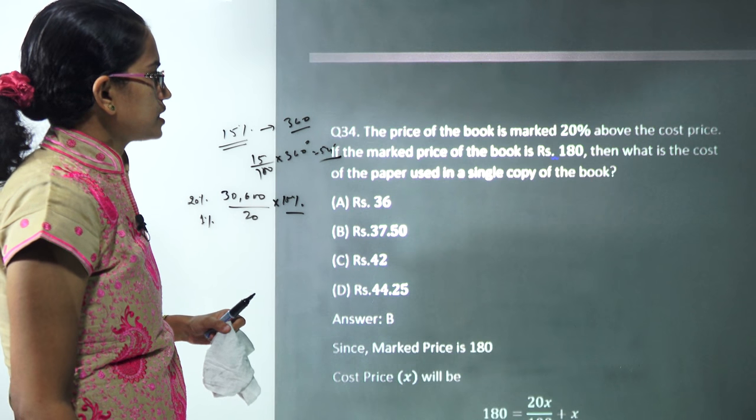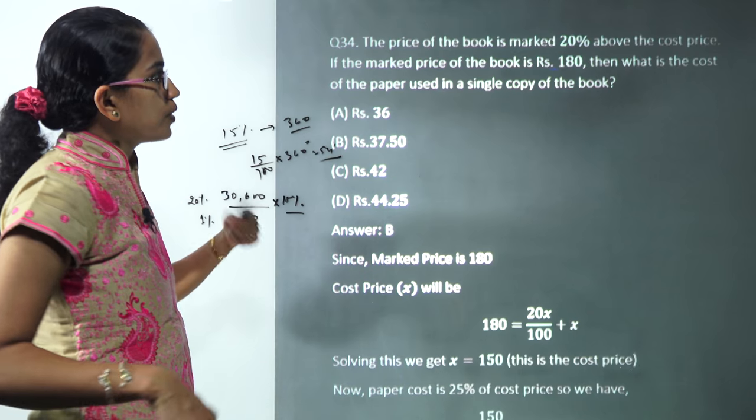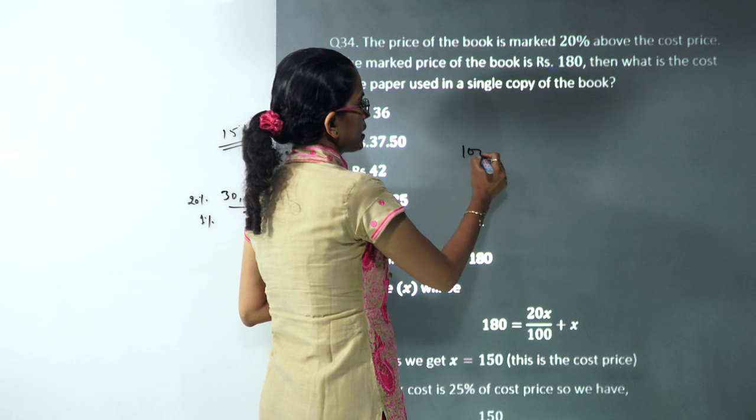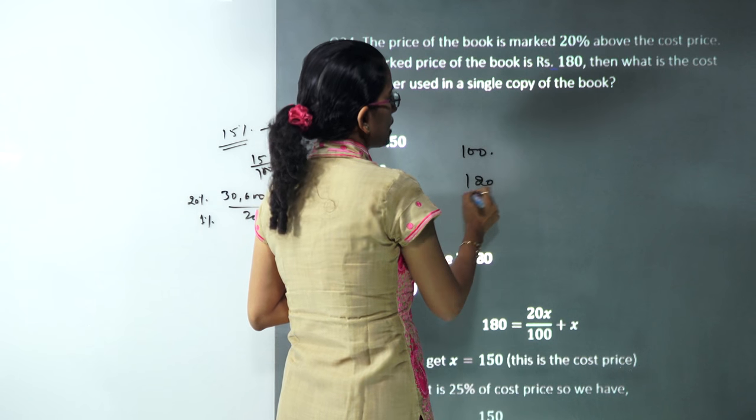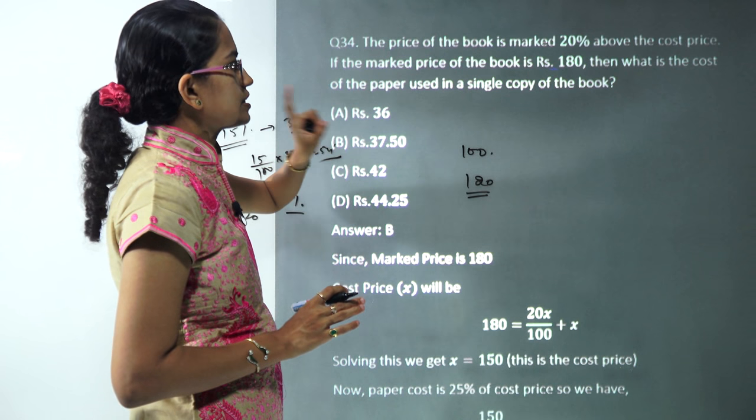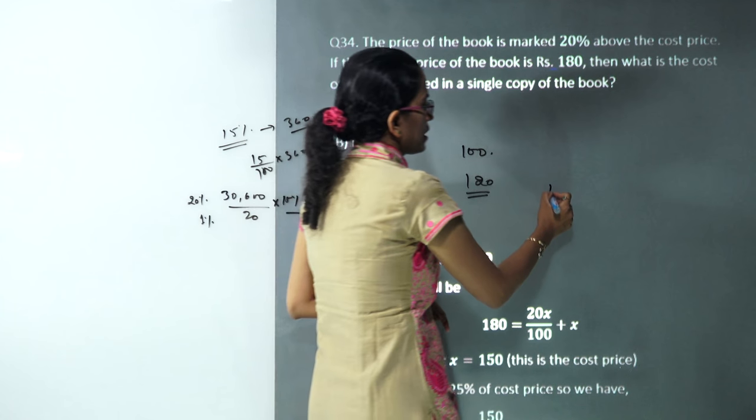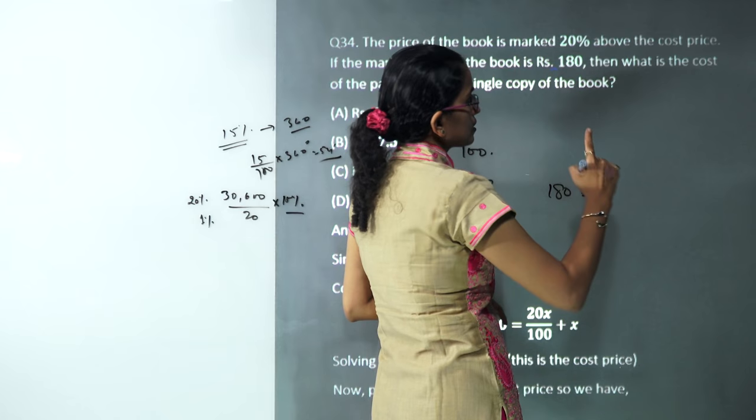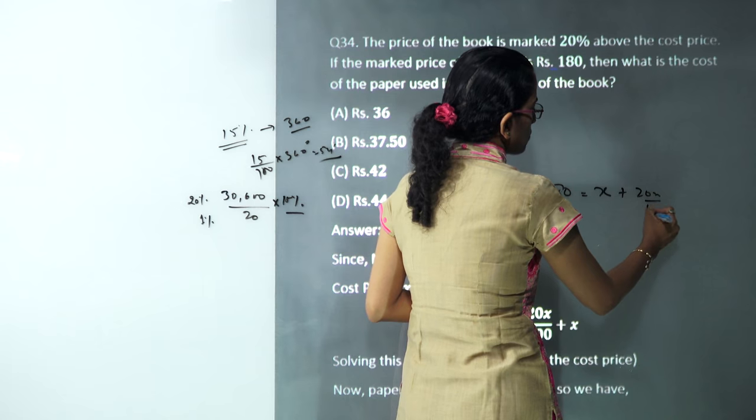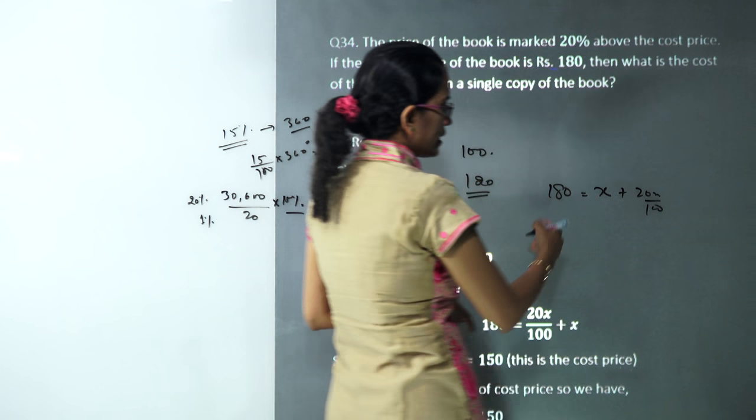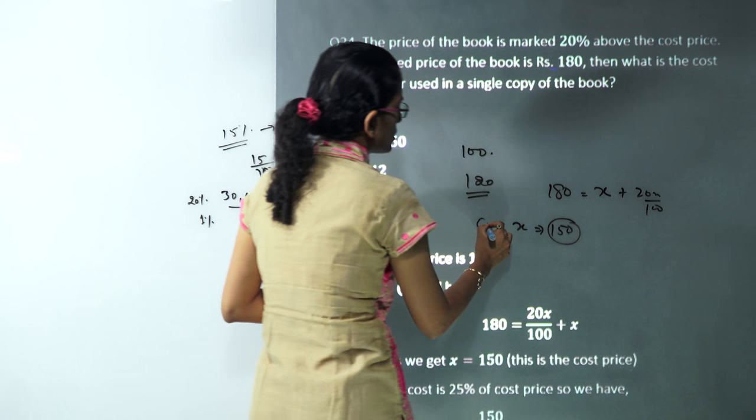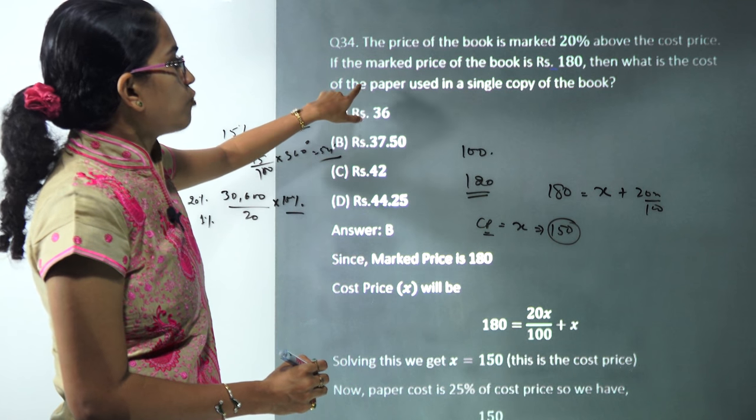The next question: the book is marked 20% above the cost price. Let the cost price be 100, so the marked price would be 120. In this case, if 180 is the marked price, it's 20% above the cost price. So let the cost price be X and 20% of this X would be 180. If I calculate X, it would come to 150, so my cost price here is 150.